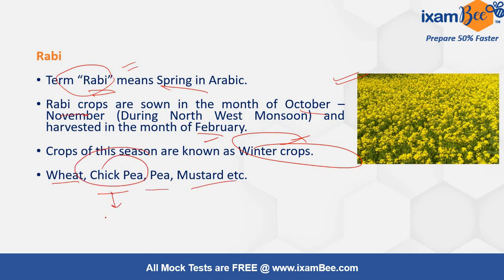Chickpea — we all know that as gram; pea which we call matar; mustard, that is sarson. You can see here a field of mustard crop — the mustard crop comes under Rabi crops. The meaning of Rabi is spring in Arabic.